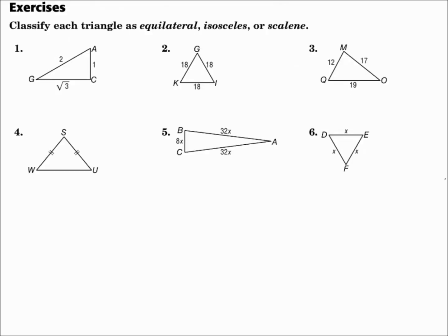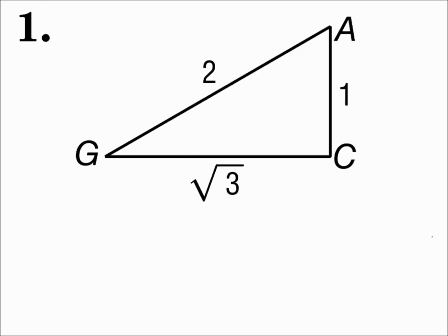Classify each triangle as equilateral, isosceles, or scalene. Number one, look at the side lengths. They're all different, and when they're all different, it's a scalene triangle.